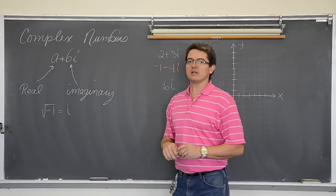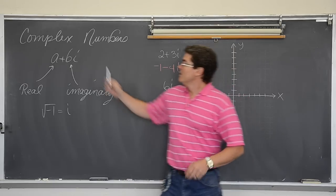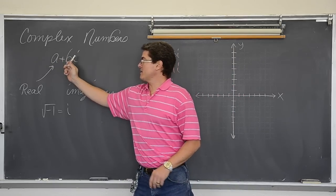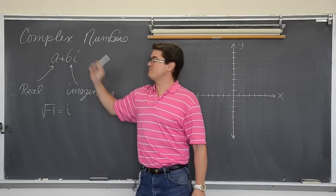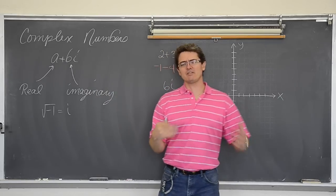Now imaginary numbers really in a textbook are called complex numbers. They have two parts. They have a real part and an imaginary part, or a plus bi. Now what do I mean by imaginary? Where does it even come up?